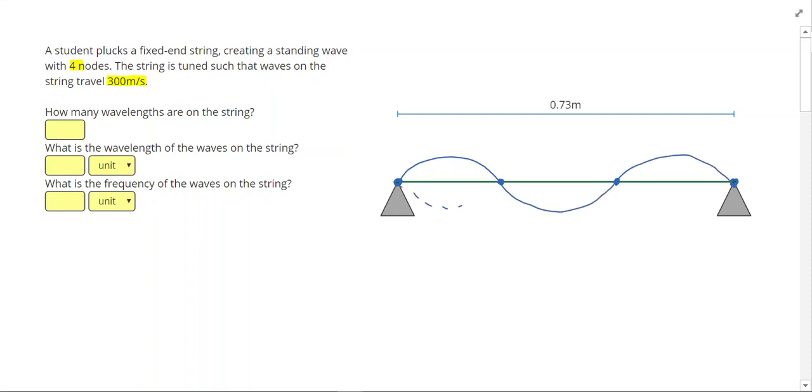Since it's a standing wave, I want to draw its reflection with a dashed line. The first thing it asks me is to count the number of wavelengths that we have on this string. I know from one node to the next node is half a wave. So I have three halves, or a total of 1.5 waves.